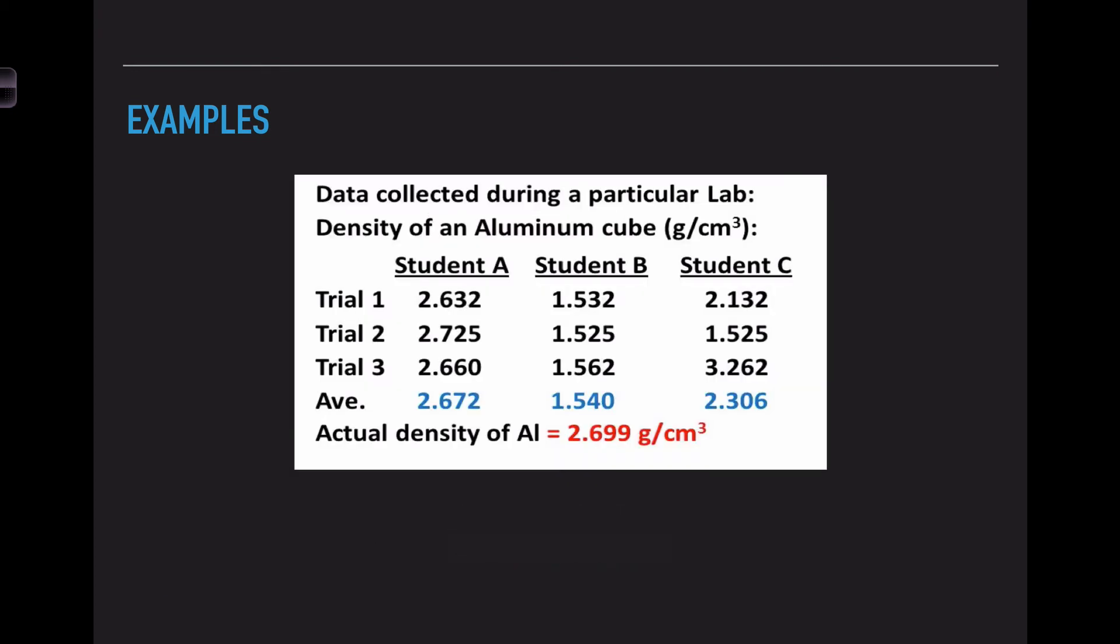Now this last example we are going to look at an actual science example. We have three students who collected data for their lab. What we want to look at is their number values compared to each other and their number value compared to the accepted. Student A had 2.6, 2.7, 2.6, and the accepted density of aluminum is 2.69. So student A, I would consider being both accurate and precise. His numbers are close to the accepted value, 0.02 off, and there is a small range of difference between the three.